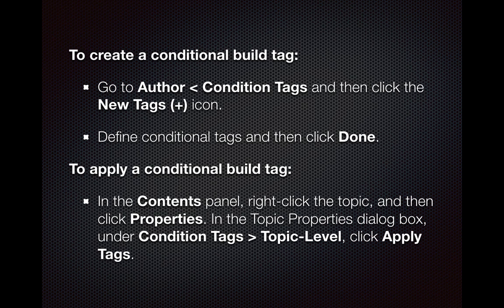To create a conditional build tag, go to Author, then Condition Tags, and click the New Tag icon. Define the conditional tags and then click Done. To apply a conditional build tag, in the Contents panel, right-click the topic and click Properties. In the Topic Properties dialog box, under Conditional Tags, go to Topic Level and then apply the tags.